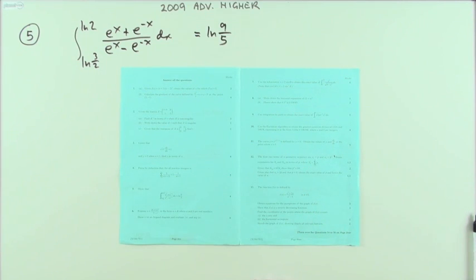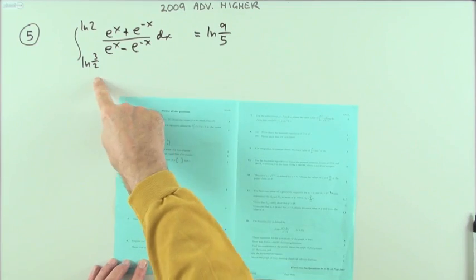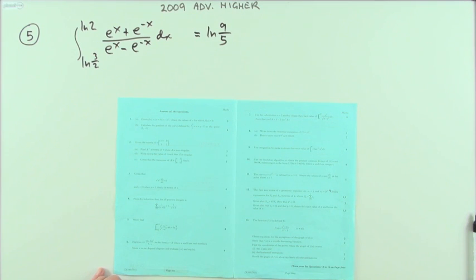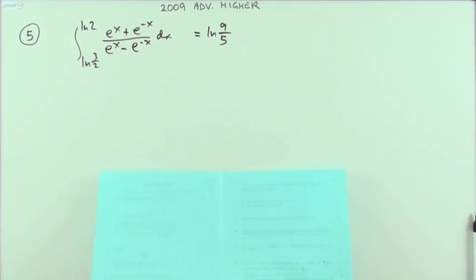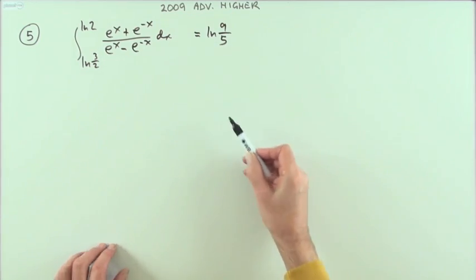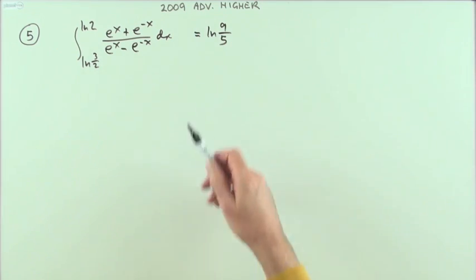Number five for the 2009 past paper shows that this definite integral comes to ln(9/5) for four marks. It says equals that, but I'm not going to mention that. That's just what I want to get as my answer, so I'm just going to forget that just now and just treat that on its own.